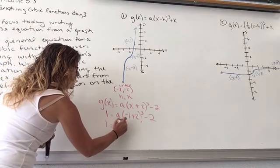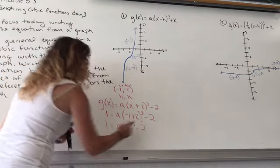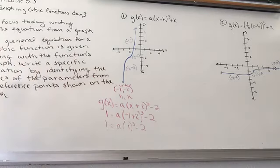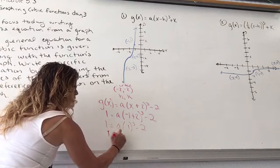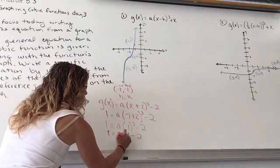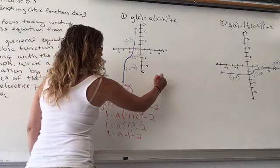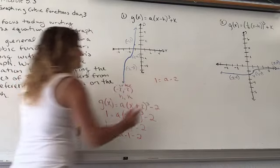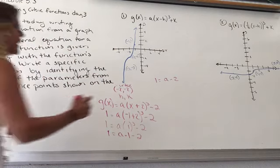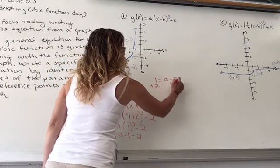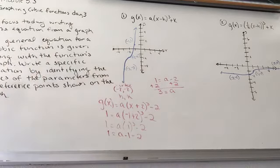So 1 = A(-1 + 2)³ - 2. Order of operations says I do the cube first. 1 cubed is simply 1. So 1 = A(1) - 2. A times 1 is just A. So now I have 1 = A - 2. To solve for A, I'm going to add the 2 to the other side. So I get my A value is 3, easy peasy.